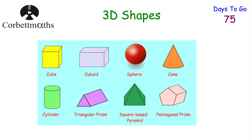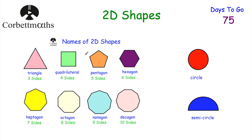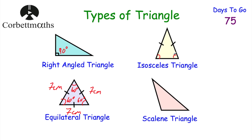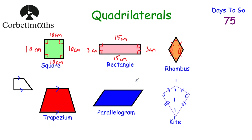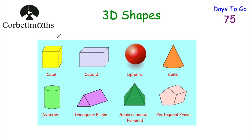Before we move on to three-dimensional shapes, make sure you remember all this information — jot these on your window if you've got window pens, or add them to your cheat sheet. It's important to know the names of your two-dimensional shapes, your types of triangles, and your types of quadrilaterals. Now let's move on to 3D shapes: cube, cuboid, sphere, cone, cylinder, triangular prism, square-based pyramid, pentagonal prism, and so on. Make sure you know the names of these 3D shapes.